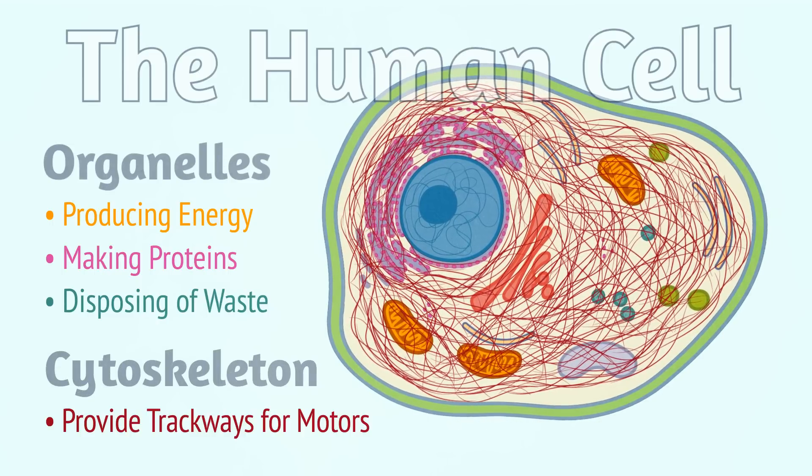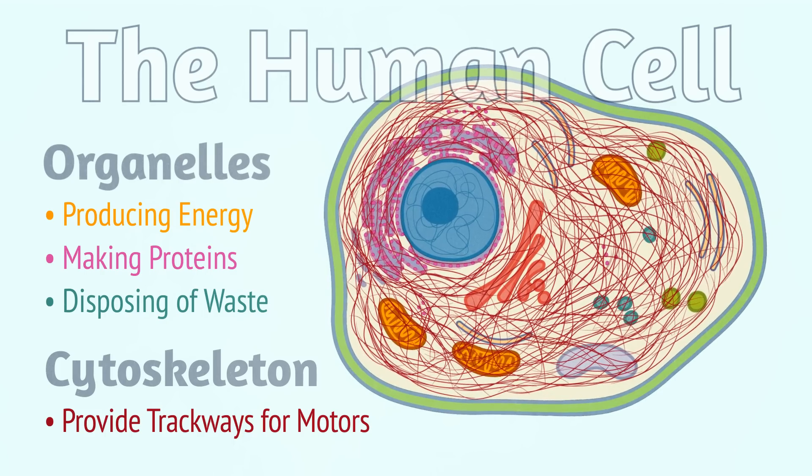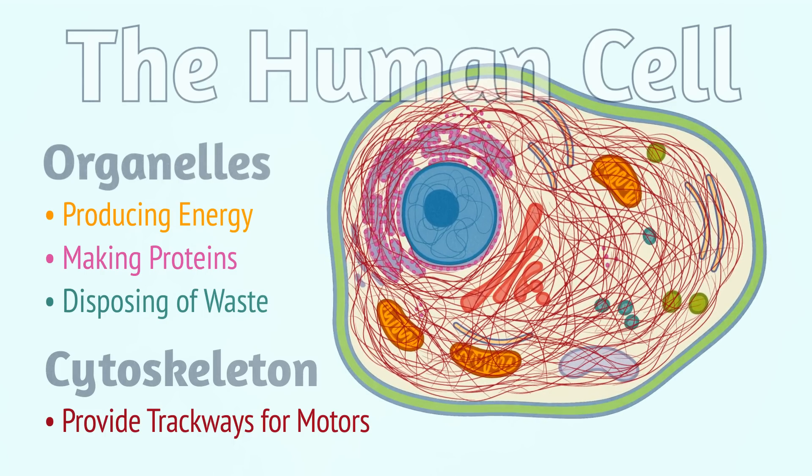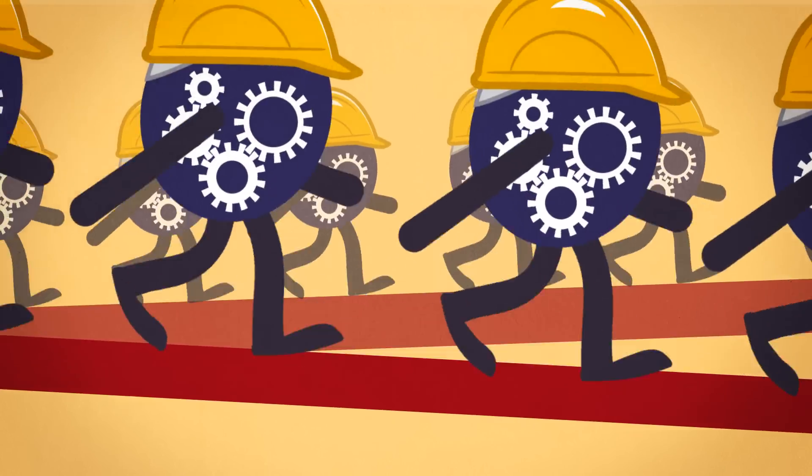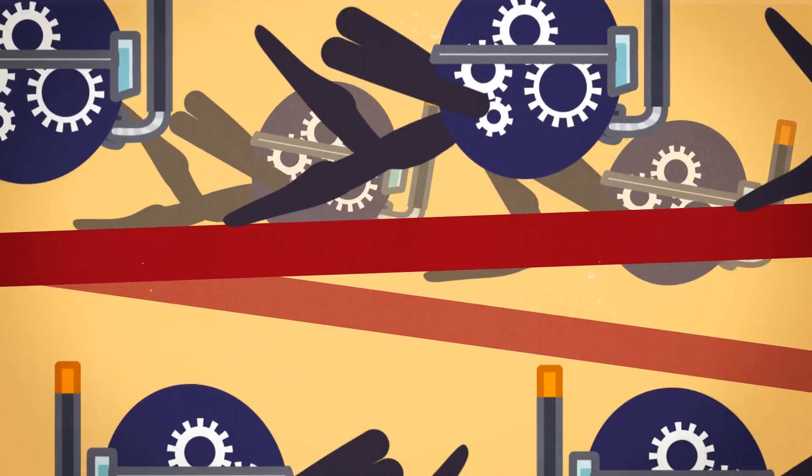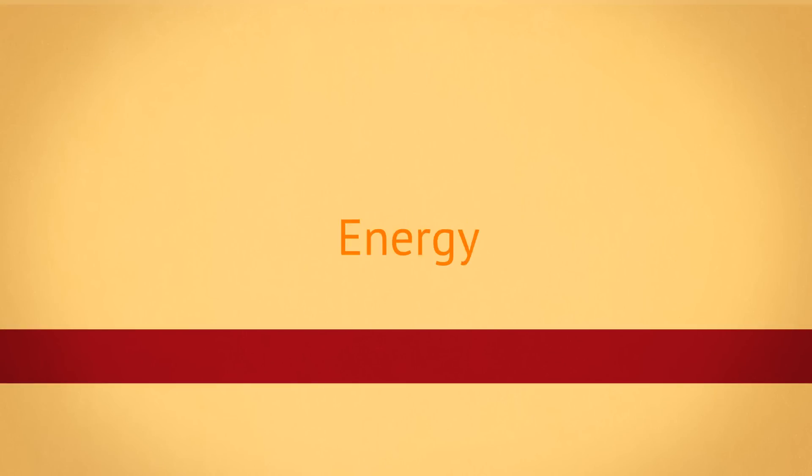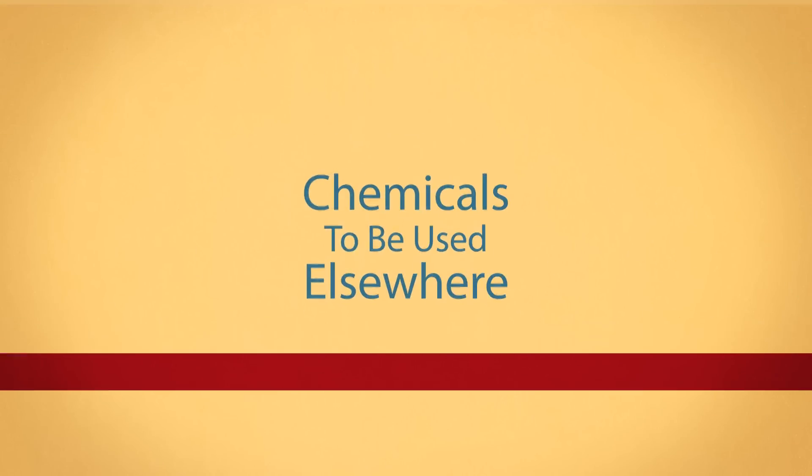These fibers also provide trackways for hundreds of thousands of motors to transport material around the cell. Some of these motors walk around the cell, some pump fluids, others swim, and still others convert energy into chemicals to use later.